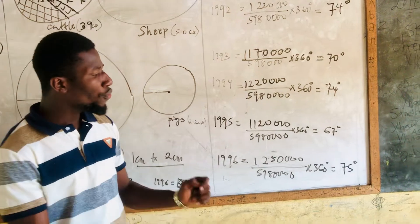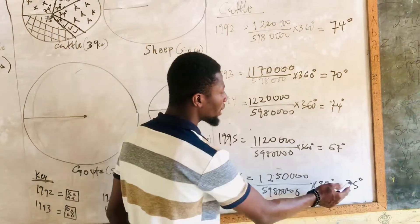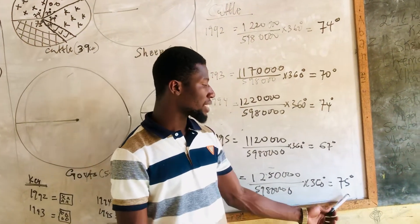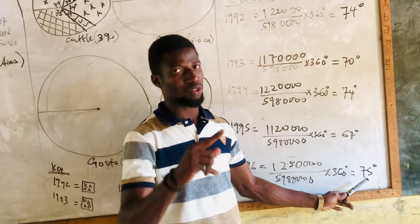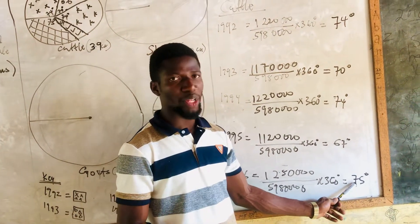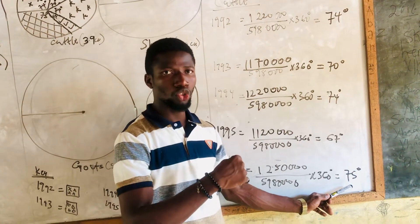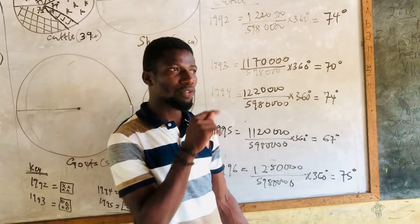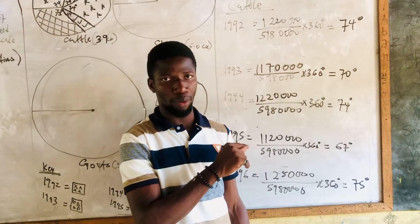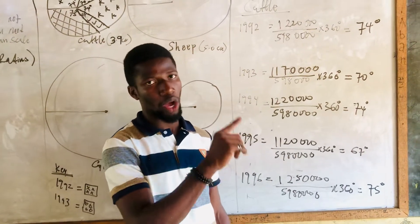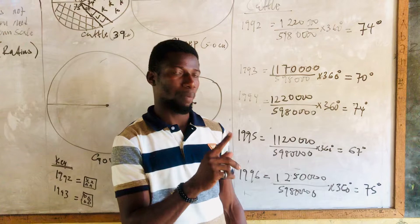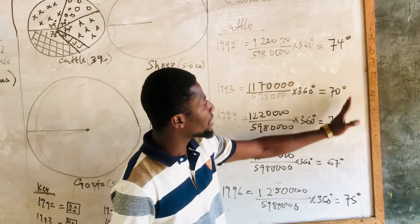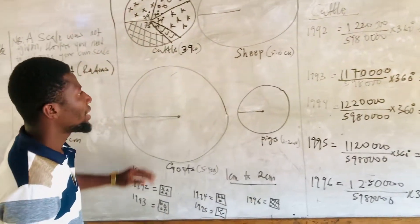When you finish calculating all the sectors, add all your answers to check that you get 360 degrees. If you don't get 360, then your calculation is wrong and you need to redo it. Even 360.1 is still wrong — all sector angles must sum exactly to 360 degrees. Make sure your rounding is handled carefully when converting values.